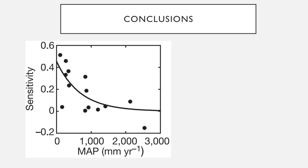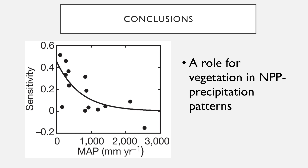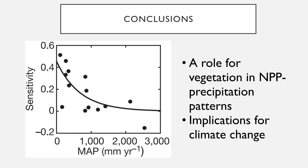Two short conclusions: the previous pattern based on differences across vegetation types likely varies substantially within regions characterized by a single dominant vegetation type. With respect to climate change, we're expecting to see precipitation changes both in mean and variability. As a consequence of vegetation's role in driving these patterns, predicting the response of an ecosystem at any one place and time requires consideration of the dominant vegetation structure within that region.